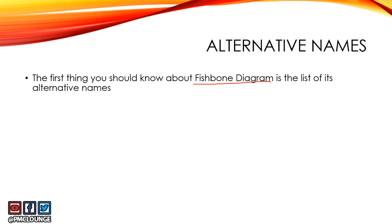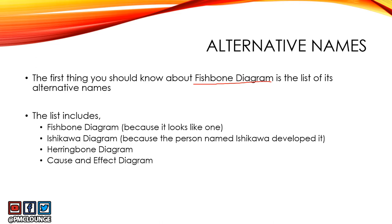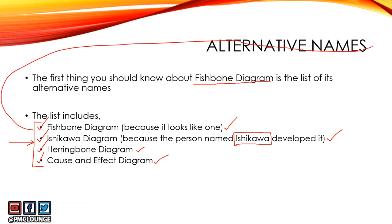Instead, you will see one of these alternatives: fishbone diagram, Ishikawa diagram, herringbone diagram, or cause and effect diagram. All four refer to the same concept. It's called the fishbone diagram because it looks like a fish, and Ishikawa diagram because the person who developed it was named Ishikawa.